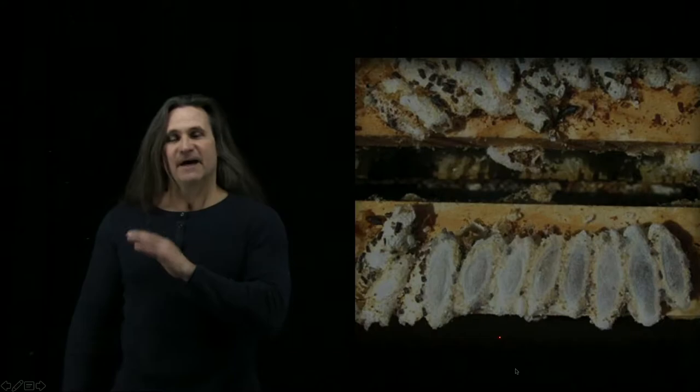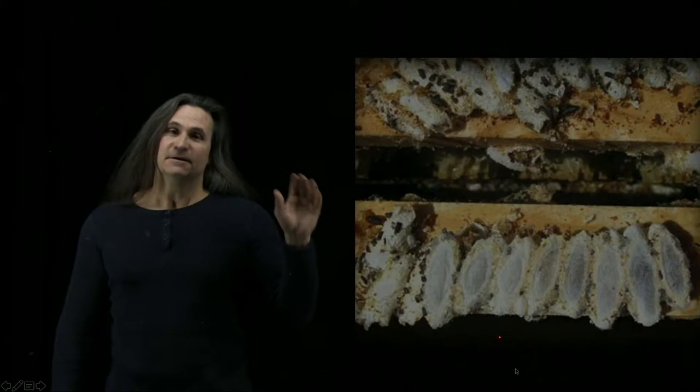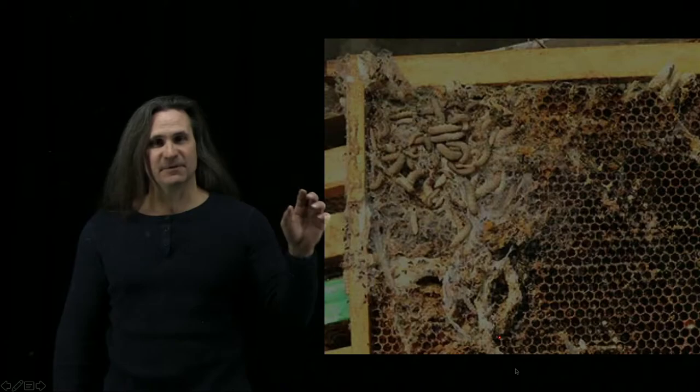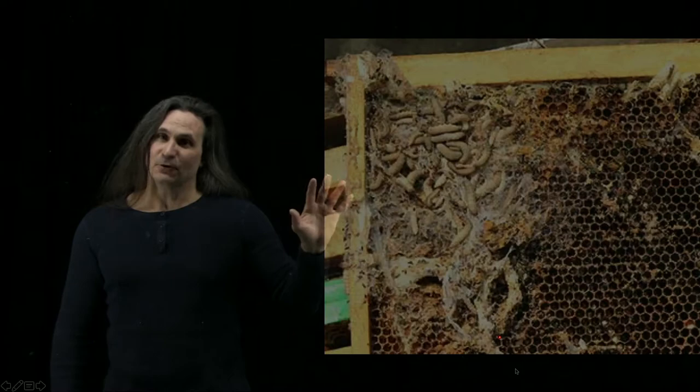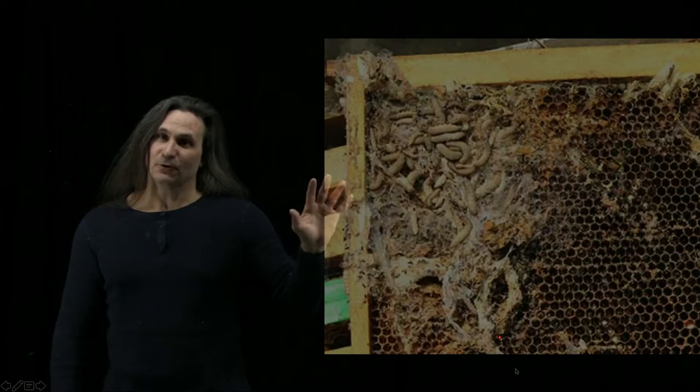The adult wax moth then leaves the hive and reproduces outside the hive, and the female looks for a hive to move back into. The adult doesn't even eat. Only the young eat, and what they eat is hive products. They don't eat the bees, they don't bother the brood, but they eat the hive products. So they only move into empty bee equipment or very weak hives that cannot remove them. They'll move in and eat the wax and the honey.